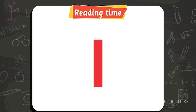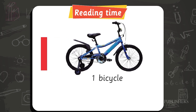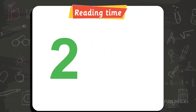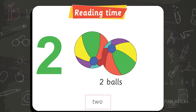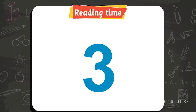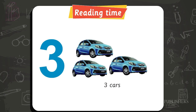Reading time. One — one bicycle. O-N-E. Two — two balls. T-W-O. Three — three cars. T-H-R-E-E.